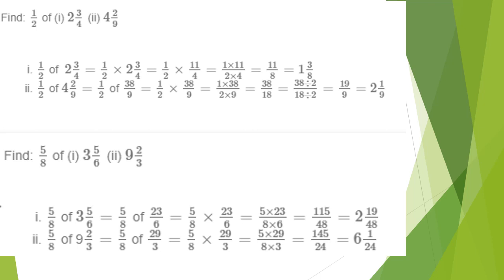Next question, Question 7b: 5/8 of 3 and 5/6. Converting 'of' to multiplication and the mixed fraction 3 5/6 into improper fraction 23/6, we get 5/8 × 23/6. Multiplying numerators over denominators: 5 × 23 = 115, denominator 48, giving 115/48, which is an improper fraction. Converting to mixed fraction gives 2 and 19/48.